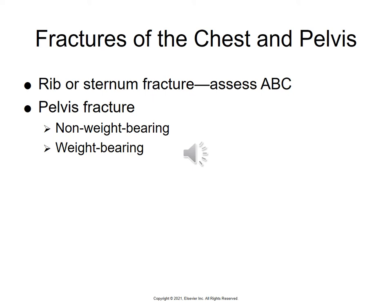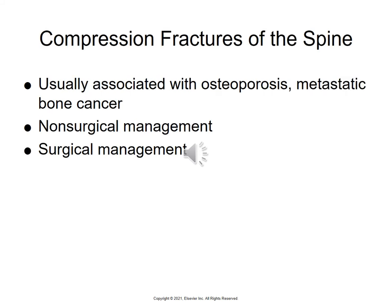Moving on to rib, sternum, chest, and pelvis — found on page 1045. For rib and sternum fractures, we need to assess ABCs because they are so close to the lungs, diaphragm, and respiratory muscles. Pelvic fractures can be either non-weight-bearing or weight-bearing. Compression fractures of the spine are usually associated with osteoporosis or metastatic bone cancer specifically.